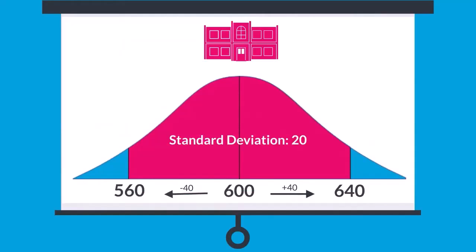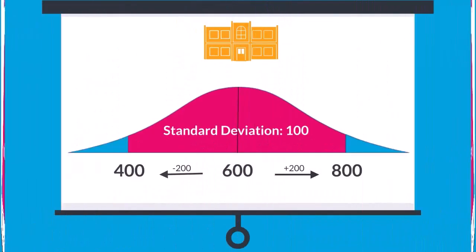At the school with standard deviation 20, most students' scores are in the range of 560 to 640, which is two standard deviations from the mean of 600. At the school with the standard deviation of 100, most students are in the range of 400 to 800. Those scores are much more spread out.